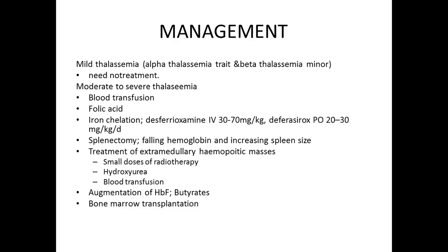Patients with thalassemia intermediate and thalassemia major are dependent on blood transfusion because bone marrow transplantation is not easily available — it is expensive, requires donors, and a good transplantation center. Their lives depend on blood transfusion along with iron chelation.